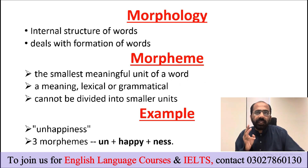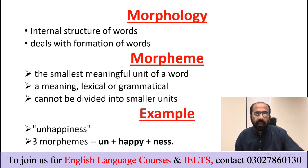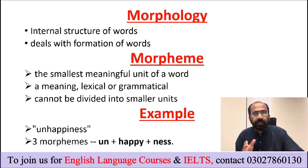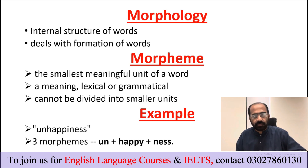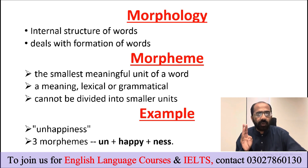What is Morpheme? Remember three things about Morpheme. Number one, it is the smallest meaningful unit of a word. Number two, it is meaningful not only lexically — it may be meaningful grammatically. Sometimes it does not have any lexical meaning, but it has grammatical meaning. For example, a bound morpheme or inflectional morpheme — take 'love' and add '-ed' to it; '-ed' is performing a grammatical function. The third thing is it cannot be divided into further smaller units.